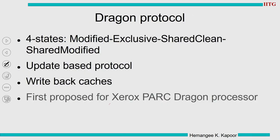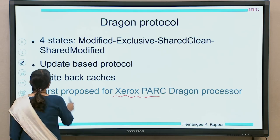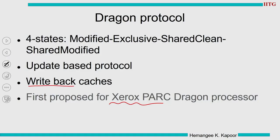Now we start with the four-state Dragon Protocol. This protocol first originated in the Xerox PARC Dragon processor, hence the name Dragon Protocol. It is for write-back caches and is an update-based protocol, as opposed to the invalidation-based protocols MSI and MESI.